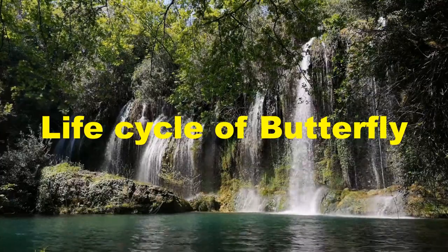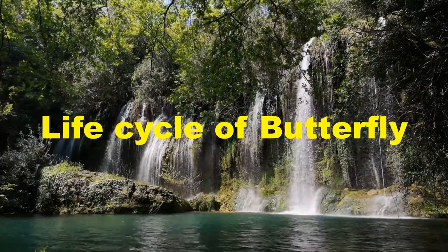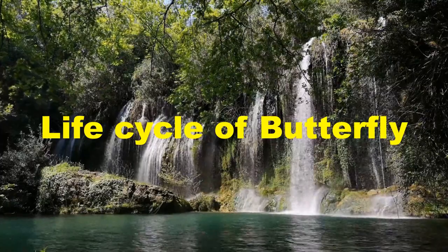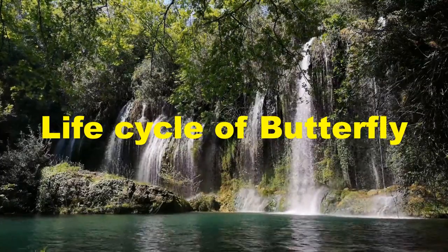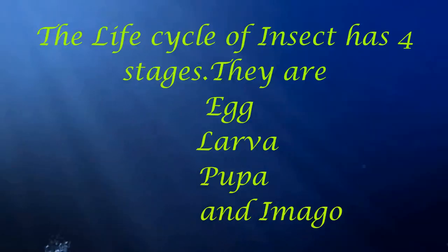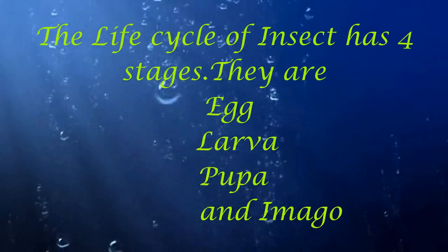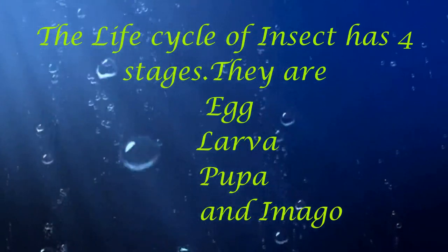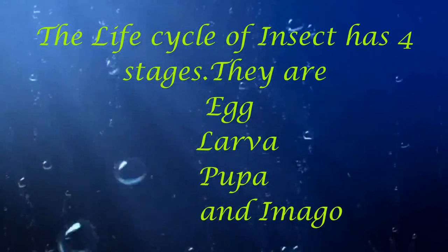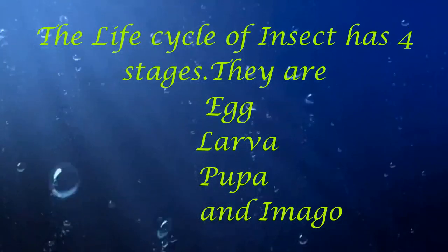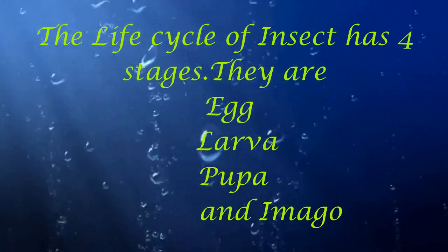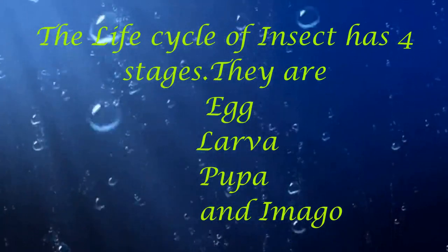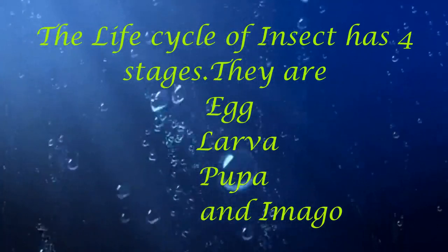This video explains about the life cycle of a butterfly. There are four stages in the metamorphosis of butterflies and moths. They are egg, larva, pupa, and adult or imago.